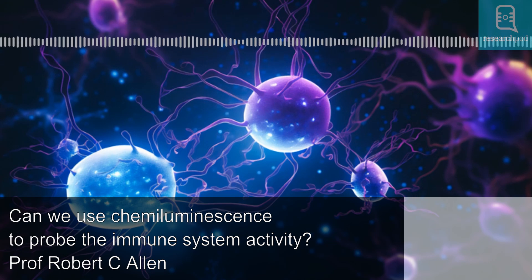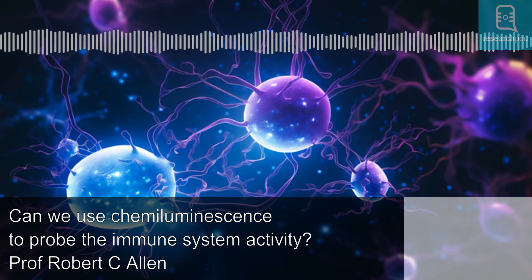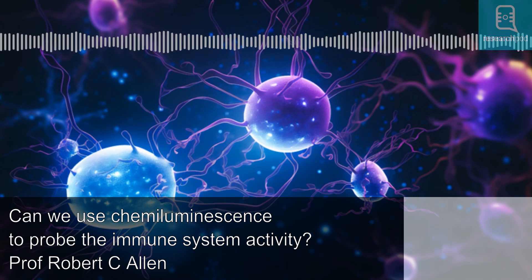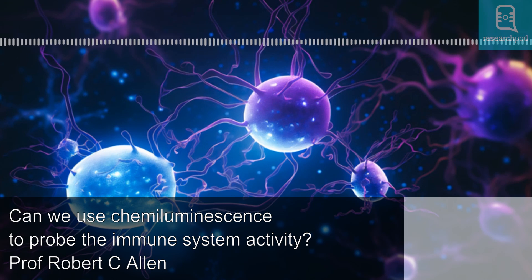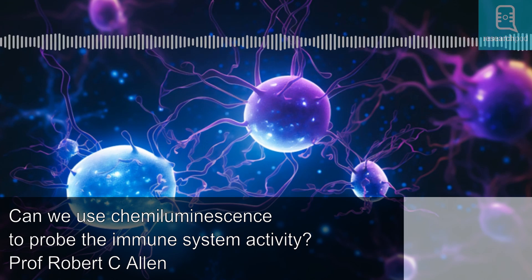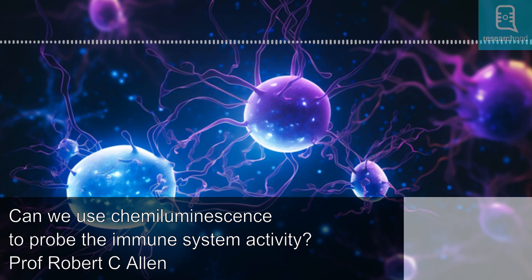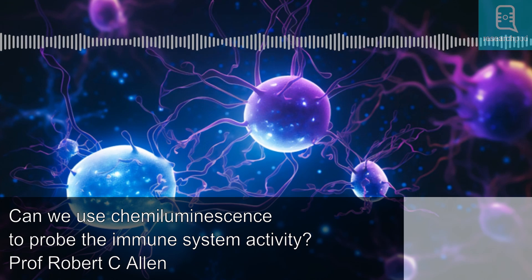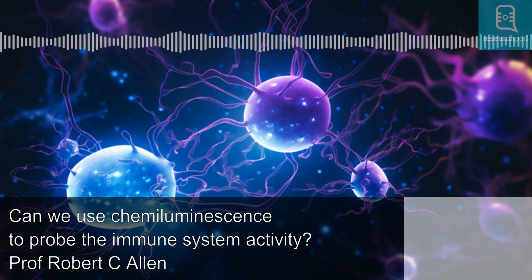Hello, and welcome to ResearchPod. Thank you for listening and joining us today. In this episode, we'll look at the work of Professor Robert C. Allen, who, over the past four decades, has invented techniques for quantifying the activities of specialised immune cells, the phagocytic leukocytes and macrophages. Allen has investigated how neutrophil respiratory burst metabolism transforms oxygen to a microbe-killing agent, which can be detected by the associated light emission. Building on this, he is now developing an assay to measure the function of the immune system using the tiniest drop of blood.